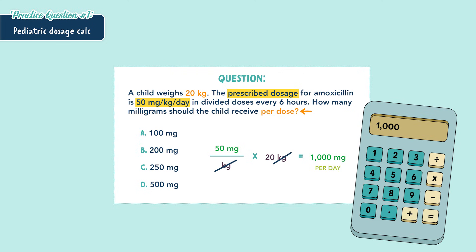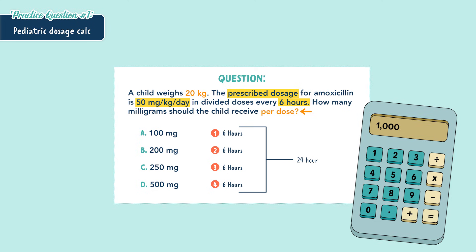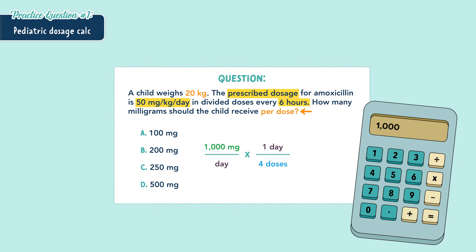But the question asked per dose and the prescription is given per day, so be sure to read the entire question because a thousand milligrams is actually wrong. We need to answer in per dose. We know the prescription is one dose every six hours — that's four times per day because there are 24 hours in a day. A thousand milligrams over one day, multiplied by one day which has four doses in it — we cross out the days leaving us with 250 milligrams per dose.